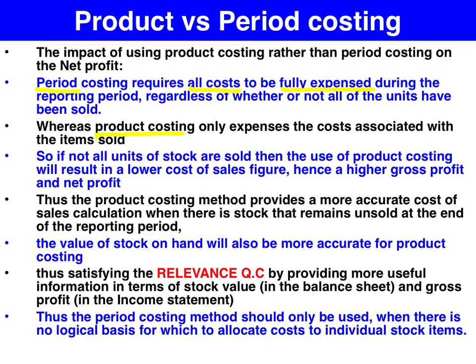So therefore, using the product method, we get a lower cost of goods sold figure and hence a higher gross profit and net profit.